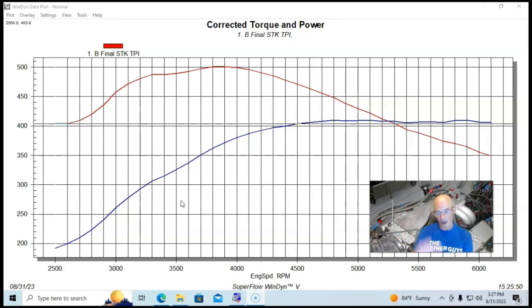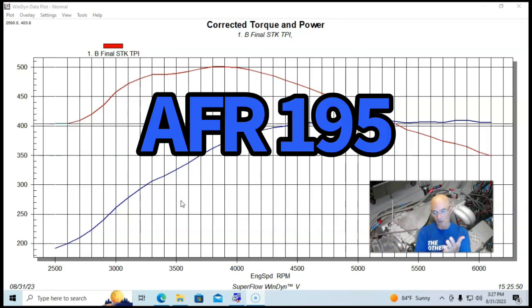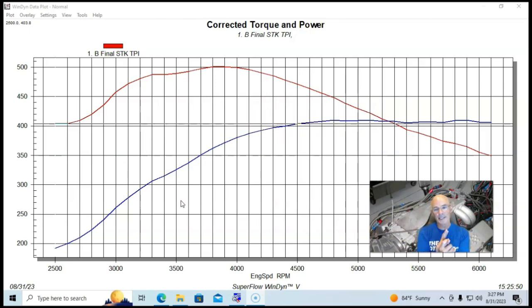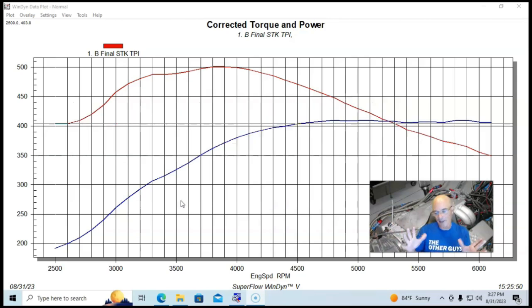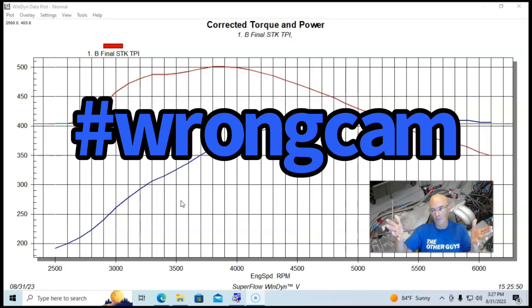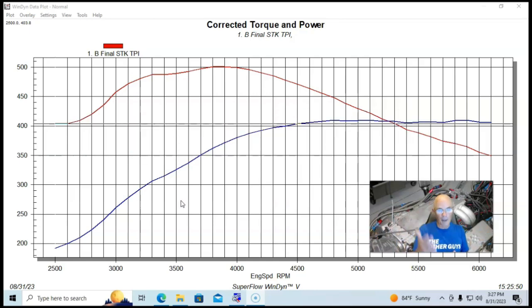To give you an idea, the 383 belonged to somebody else at Westech, but it had Airflow Research heads on it. But it had a really big camshaft, like a 242-248 camshaft in it, which is totally wrong for testing combinations that want to make peak torque at like 3,500 to 4,000 RPM.